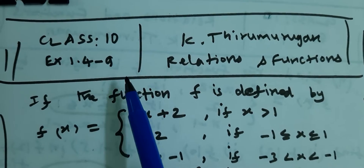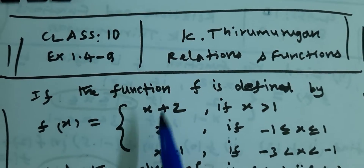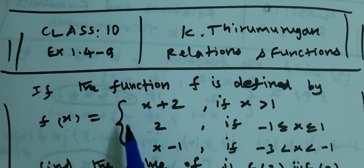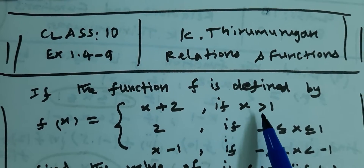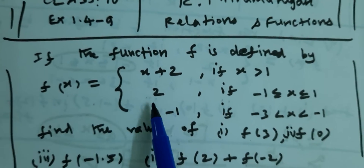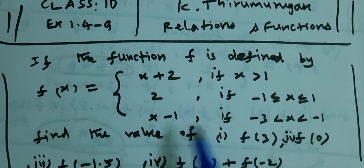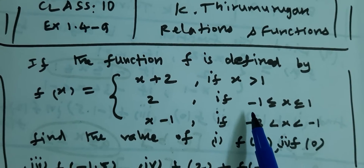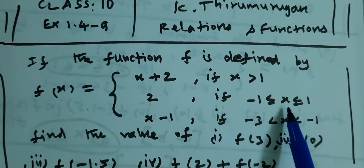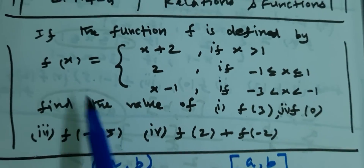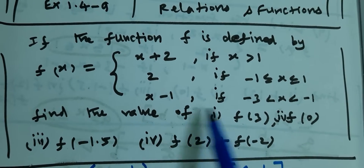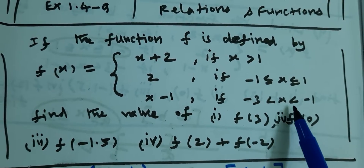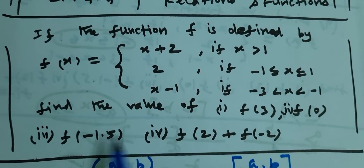Question number 9. If the function f is defined by: f of x equals x plus 2 if x is greater than 1; f of x equals 2 if minus 1 is less than or equal to x less than or equal to 1; and f of x equals x minus 1 if minus 3 is less than x less than minus 1.